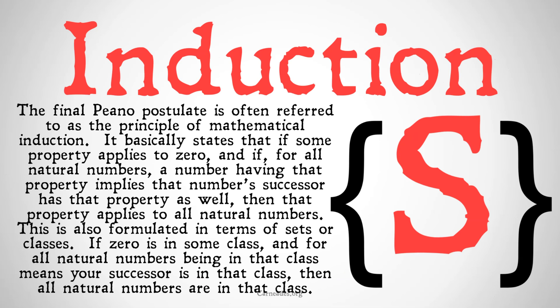The final Peano postulate is often referred to as the principle of mathematical induction. It basically states that if some property applies to zero, and if, for all natural numbers, a number having that property implies that that number's successor also has that property, then that property applies to all natural numbers.